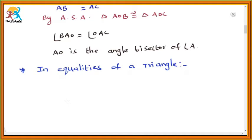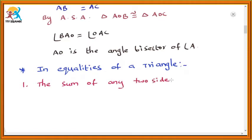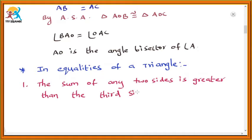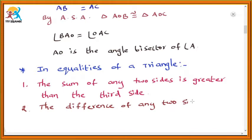Let us discuss inequalities of a triangle. To form a triangle, we have two conditions, which are called inequalities. The first condition is the sum of any two sides should be greater than the third side. And the second condition is the difference of any two sides is less than the third side. These two are the inequalities to form a triangle.